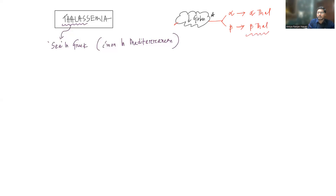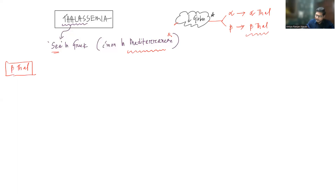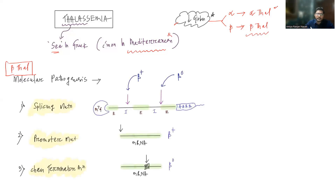Beta thalassemia is much more common than alpha thalassemia, so we'll first discuss beta thalassemia. Thalassemia means 'sea' in Greek and is common in the Mediterranean basin. These conditions are common in malaria-endemic regions. In beta thalassemia, point mutations are usually common, whereas in alpha thalassemia, deletional mutations are mostly common.